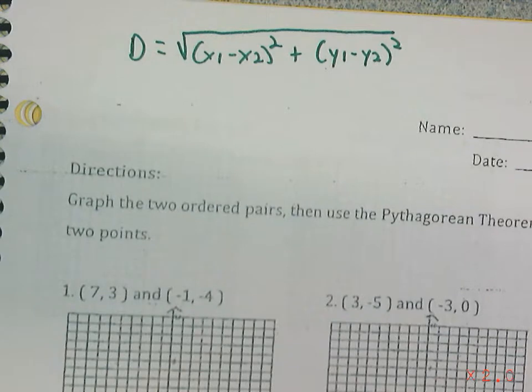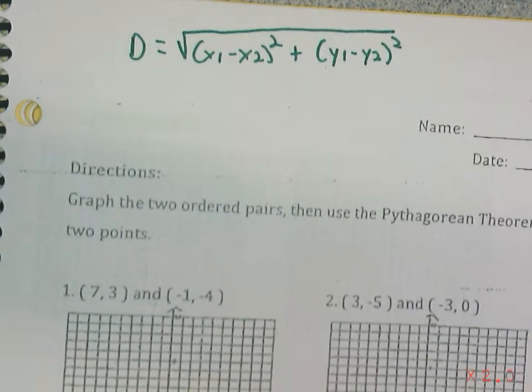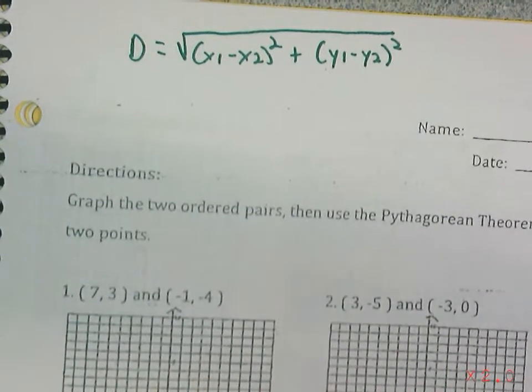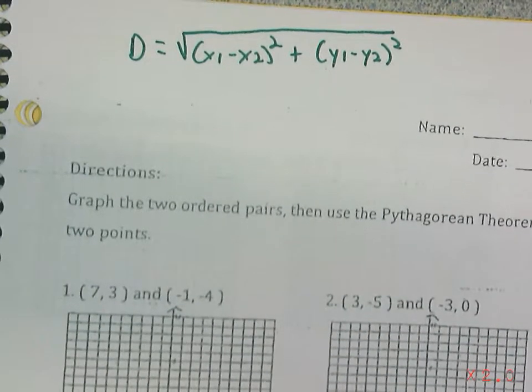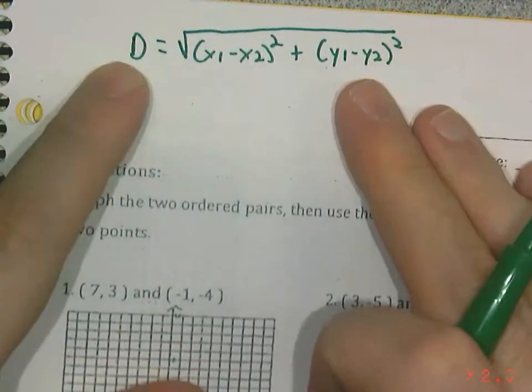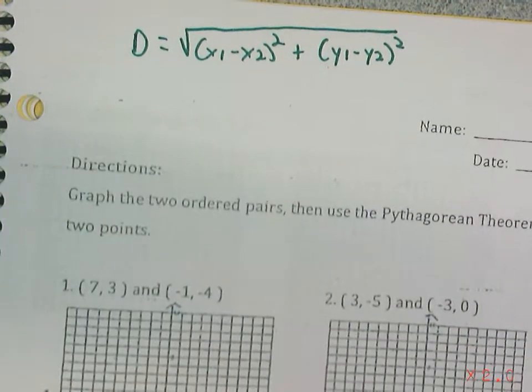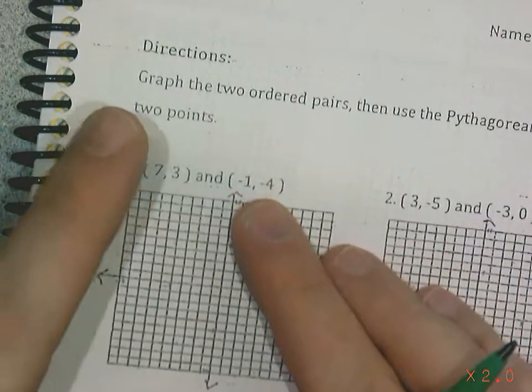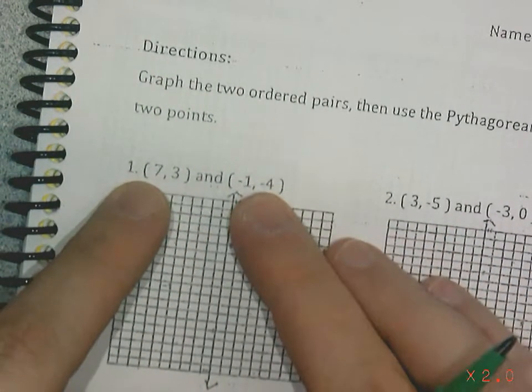If you have a coordinate plane, you could actually use the Pythagorean theorem on these in order to help you solve them. But let's look at an example here. Let's use our distance formula first, and then I'll show you how it works with the Pythagorean theorem as well. So looking at number one, I've got seven, three, and negative one, four.